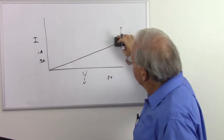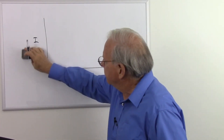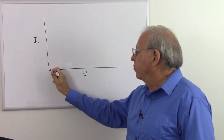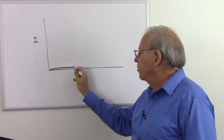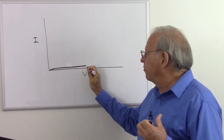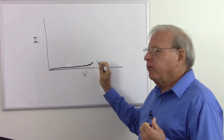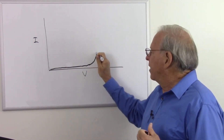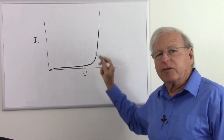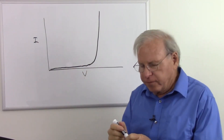With a regular silicon diode, as we increase our voltage, we're going to get a very tiny increase in current until we get to about half a volt and it starts to increase. And roughly between 0.7 and 0.8 volts, it cascades and suddenly a very tiny change in voltage gives us a huge change in current. So that's a typical diode curve.